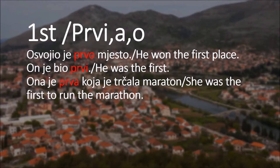When you're talking about the first, second, third, whatever it is, it always refers to the following noun. So what is it you're talking about? If your noun is masculine, you would say prvi. If it's a feminine noun, it's always going to be prva, and if it's neuter, it will be prvo.